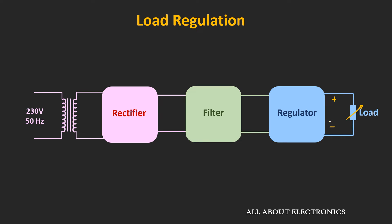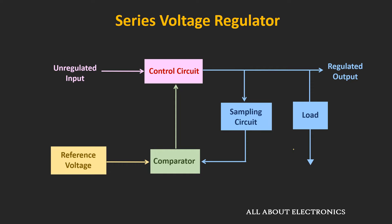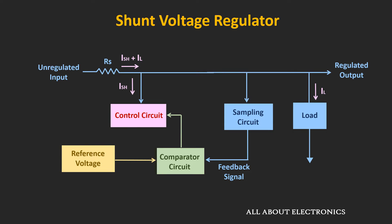If the power supply is unregulated, or without any regulator, the line and load regulations are very poor. To improve the line and load regulation and to get a stable output voltage, a voltage regulator is necessary. This voltage regulator can be categorized in two types: the series voltage regulator and the shunt voltage regulator. In the series voltage regulator, the controlling element is in series with the load, while in the shunt regulator, it is in parallel with the load.